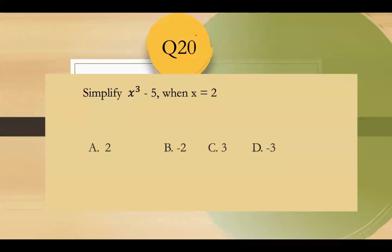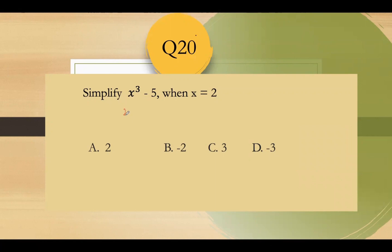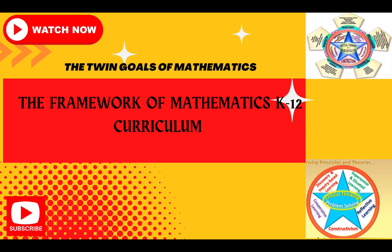Question number 20: simplify x cubed minus 5 when x equals 2. Substitute: 2 cubed minus 5 equals 8 minus 5 equals positive 3. The answer is letter C. Thank you everyone and good luck in your examination. Please don't forget to subscribe to my channel.